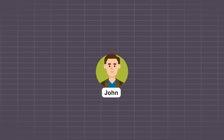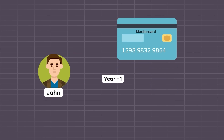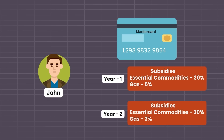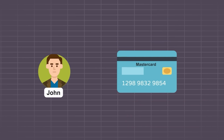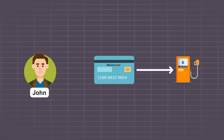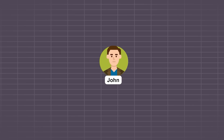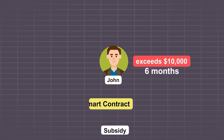If John is an asylum seeker, the government will program his MasterCard such that in the first year, he'll be eligible for a 30% subsidy on essential commodities and 5% subsidy for gas. In the second year, he'll be eligible for only 20% subsidy on essential commodities and 3% on gas. As time passes, his MasterCard gets automatically updated. The smart contract can also be sophisticated enough to put a limitation such that if John's income exceeds $10,000 for 6 months consecutively, the smart contract will automatically revoke the subsidy, because now John is financially independent and no longer needs it.